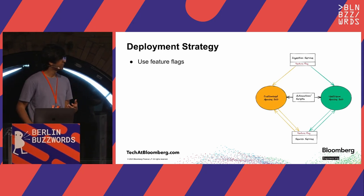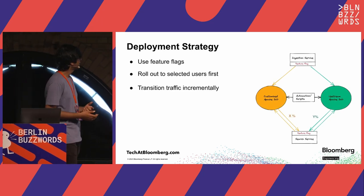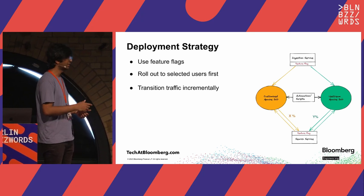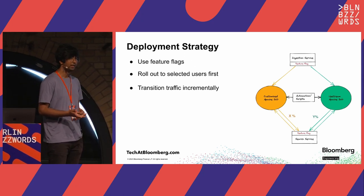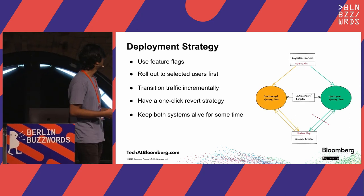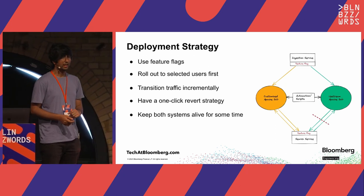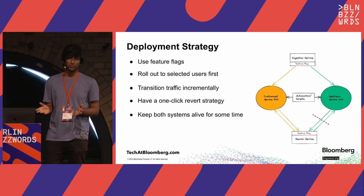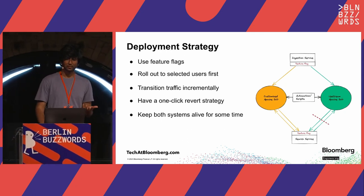Once you've done the performance testing, the next step is to actually deploy all of these things. Feature flags come in very handy here. What we did is we rolled out the new system to users incrementally — 90 percent of queries still go to the old system, 10 percent go to the new system — and then using feature flags, we incrementally transitioned all of the traffic to the new system. I would also like to highlight that even when you transition everything to the new system, it's still a good idea to keep the old system alive and have a red button to quickly switch back to the old system. Because no matter how good you test, things can happen. So it's a good idea to keep both systems alive for some time.